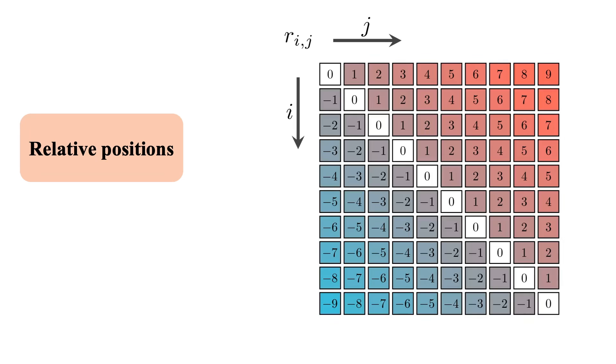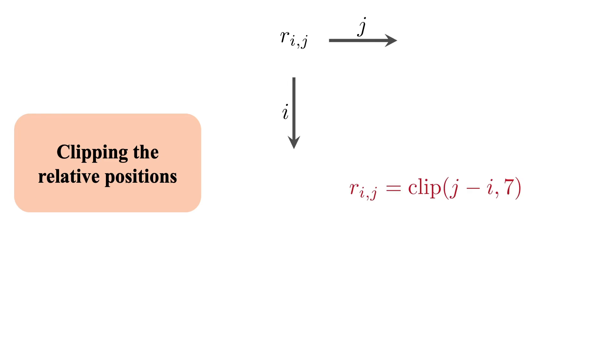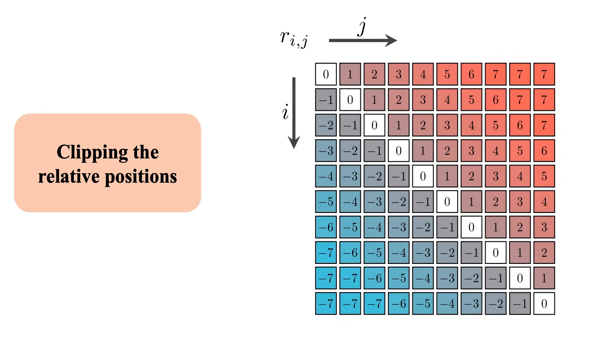Now assume we have already defined a fixed-size embedding layer. In order to use these relative positions for embedding lookup, first we need to clip these relative positions. We can define a max clip length that matches with the fixed size of our embedding layer tensor. For this example, we assume the clip length is 7, so that means all the relative positions greater than 7 and less than negative 7 are clipped to 7. At this point, we can use embedding lookup for these relative positions, which will give us a three-dimensional tensor R of size L by L by the representation dimension d.